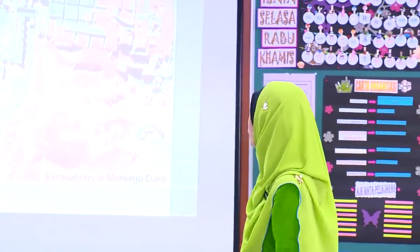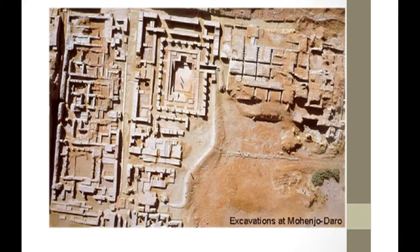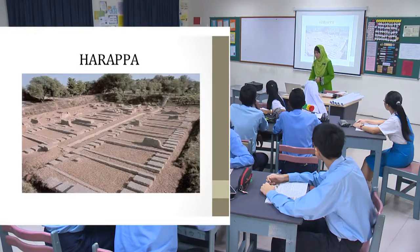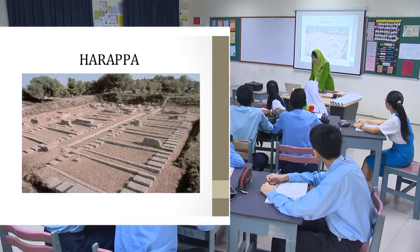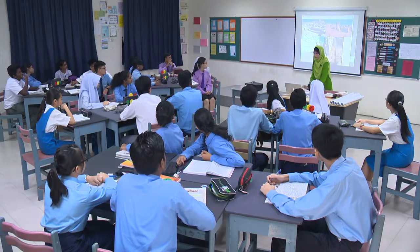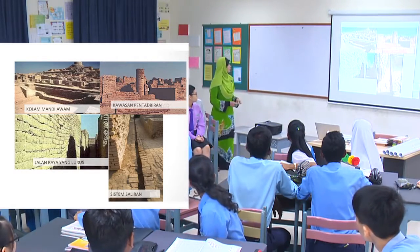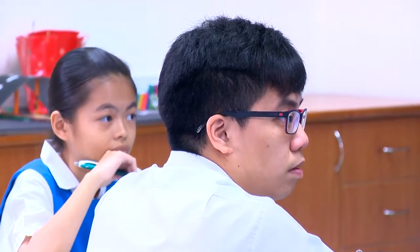Ini adalah contoh gambaran tapak bandar Mohenjo-Daro yang diambil daripada pandangan atas. Apa yang dapat kamu saksikan daripada gambar ini? Bandarnya nampak sistematik dan teratur. Cikgu ada sediakan satu gambar yang menunjukkan bekas tapak bandar Harappa, manakala ini merupakan kawasan perumahan bagi bandar Mohenjo-Daro. Ini adalah beberapa ciri bandar yang terdapat dalam bandar Mohenjo-Daro yang perlu kamu ketahui.